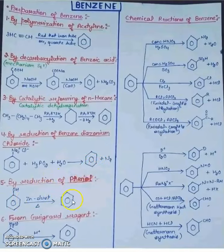By reduction of phenol with zinc dust from Grignard reagent MgCl, this is the formation of benzene.